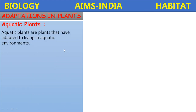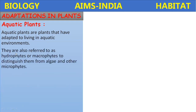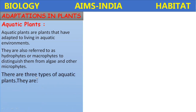Aquatic plants are the plants which live in water. They are scientifically called hydrophytes. They are the plants that have adapted to living in an aquatic environment. They are also referred to as hydrophytes or macrophytes to distinguish them from algae and other microphytes.